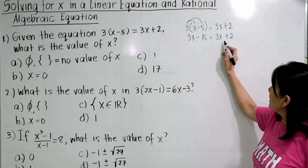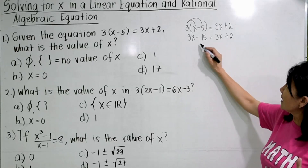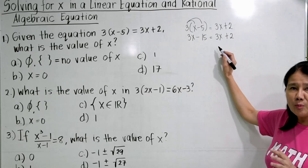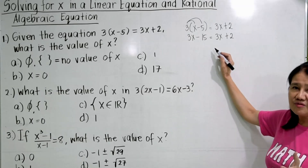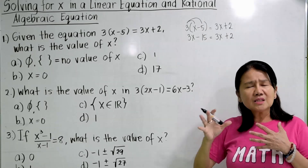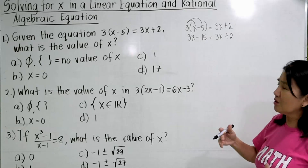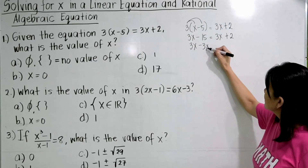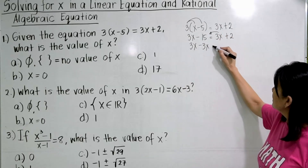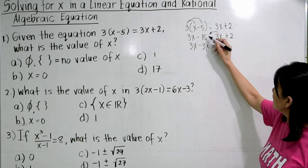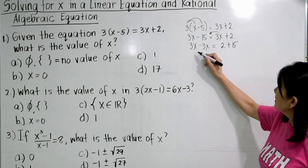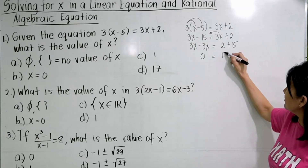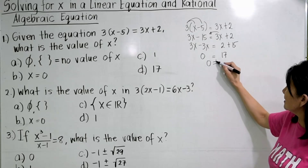At this moment, some of you may have observed that the left side is not equal to the right side. So if that happens, you can automatically say that the answer is empty set. Now, let us assume that you didn't notice it and you continue solving. So we transpose 3X to the other side, and transpose negative 15 to the other side to get positive 15. We get 0 equals 2 plus 15, which is 17.